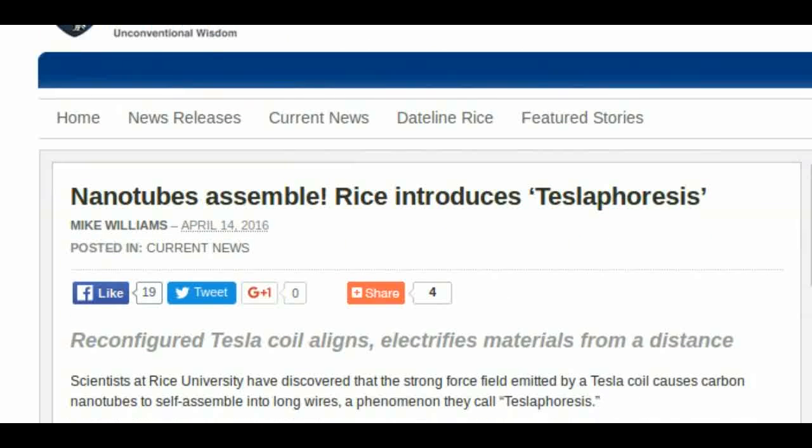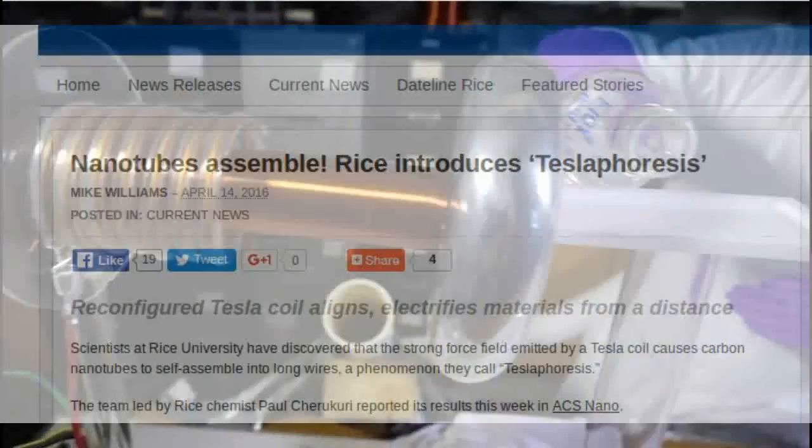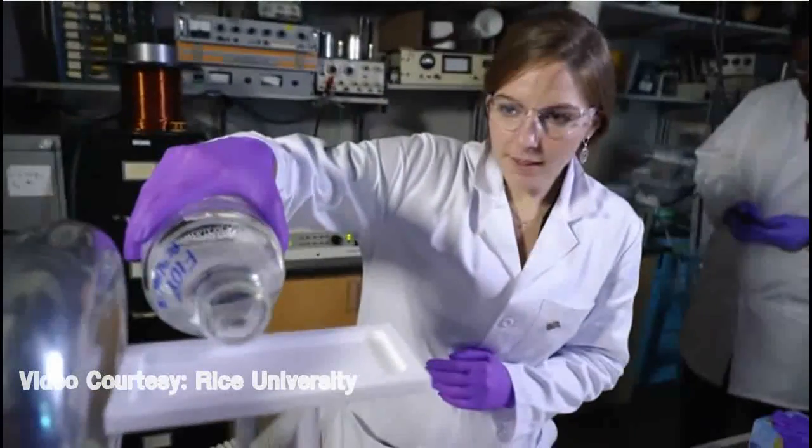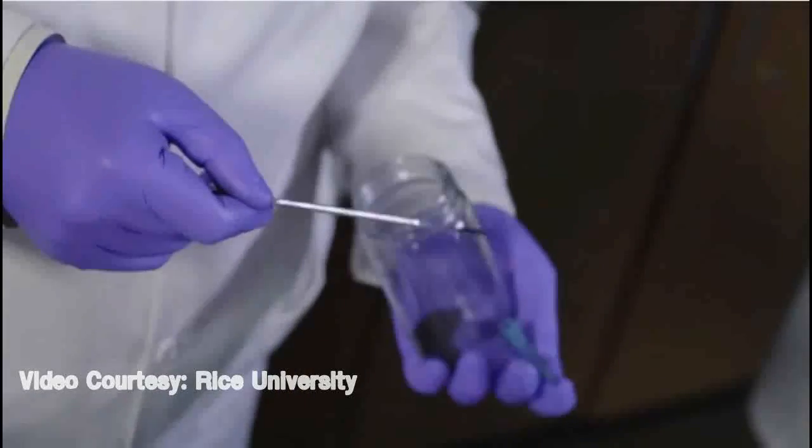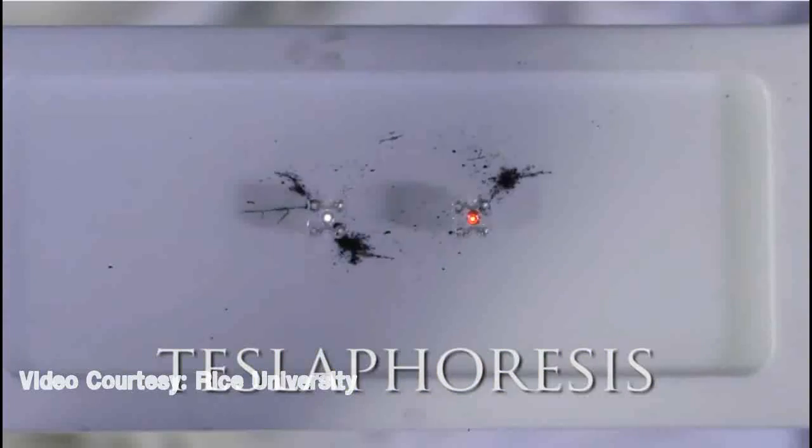Scientists at Rice University have discovered that the strong force field emitted by a Tesla coil causes carbon nanotubes to self-assemble into long wires, a phenomenon they call Teslaphoresis.